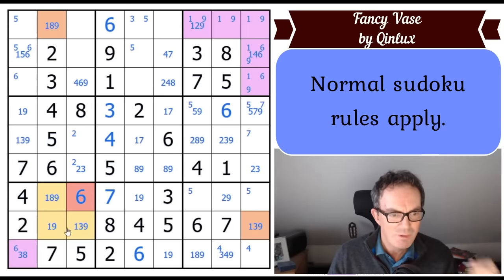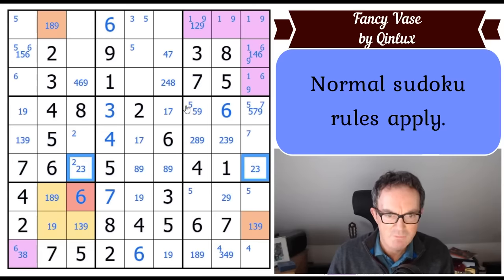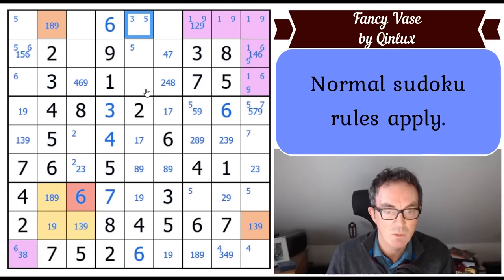That square can no longer be a three because of this three. We're so close to actually getting some real progress. This square can't be a six now. So this is now down to three or eight. This square is now one or nine only. Where does six go in that box? It can only go there. Leaving us with a one, nine pair. That's not a one. So this square is just five, seven, or nine.